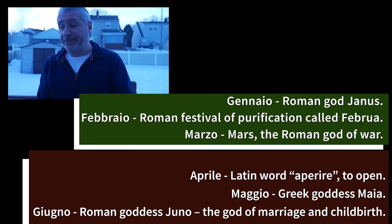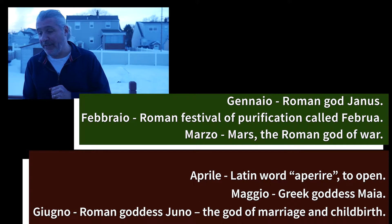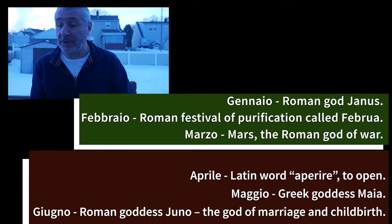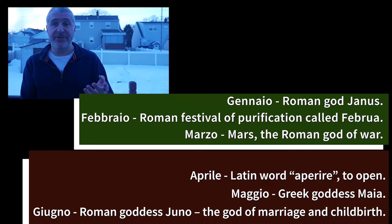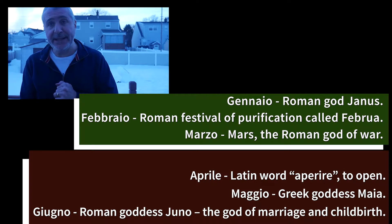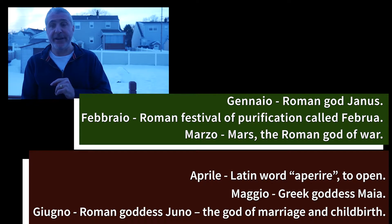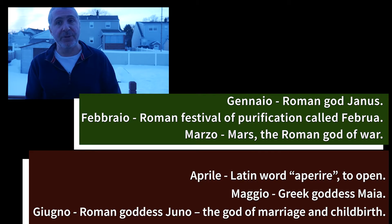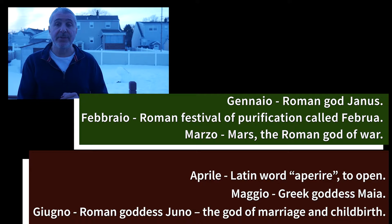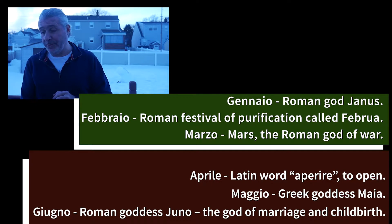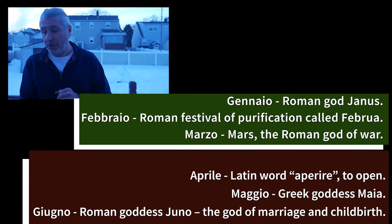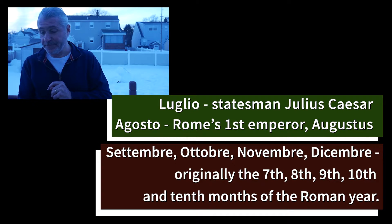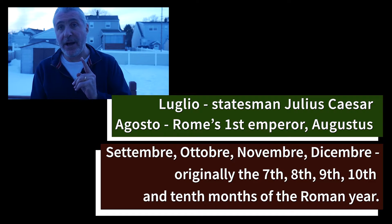Interesting point about the origin of these months. Gennaio comes from the Roman god Janus. Febbraio from the Roman festival of purification called Februa. Marzo is from Mars, the Roman god of war. Aprile from the Latin word aperire — to open — like flowers do in the spring. Maggio from the Greek goddess Maya. Giugno from the Roman goddess Juno, the god of marriage and childbirth. Luglio from the statesman Julius Caesar. And Agosto from Rome's first emperor, Augustus.